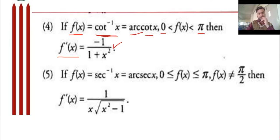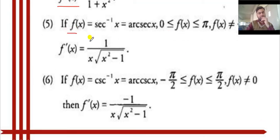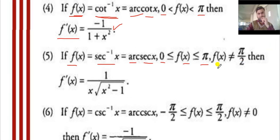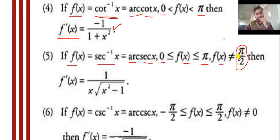Formula 5: if f(x) is equal to sec⁻¹x, also written as arc sec x. The value of x in this function varies from 0 to π, but x is not equal to π/2. This is because sec(90°) is infinite. So the value of x is never equal to π/2 or 90°. Then f'(x) is 1 upon x√(x² - 1).